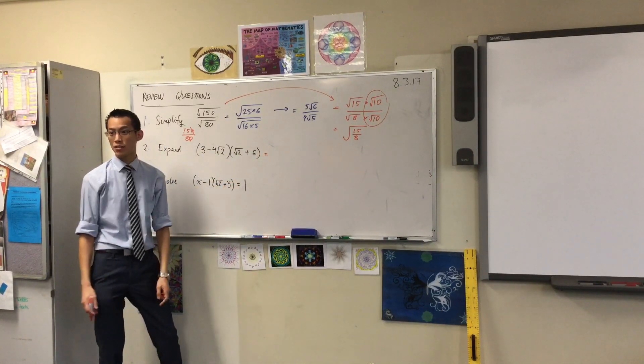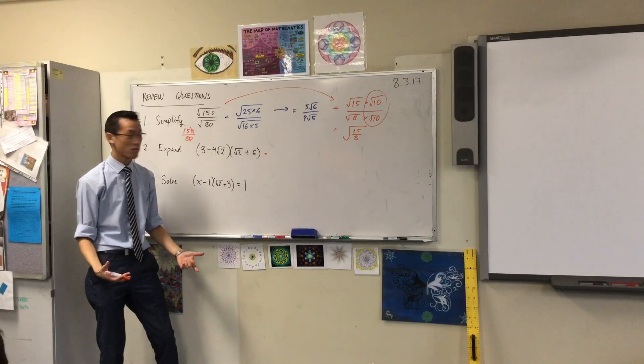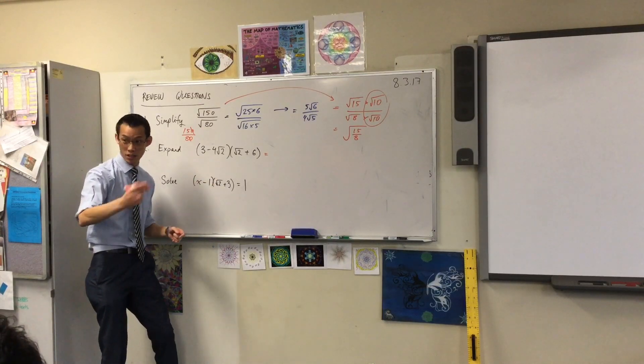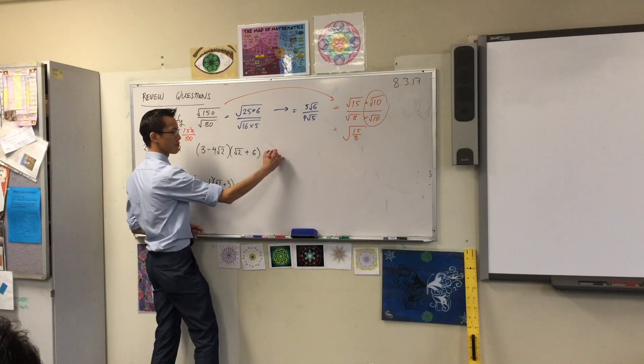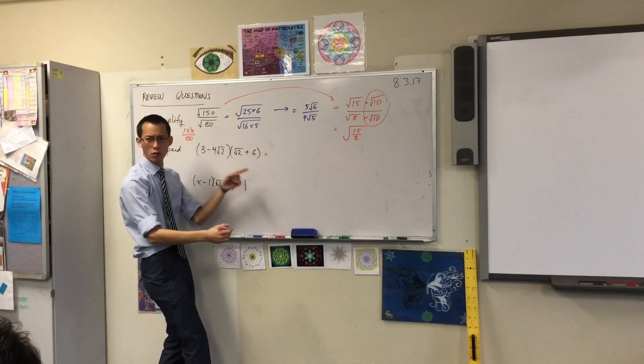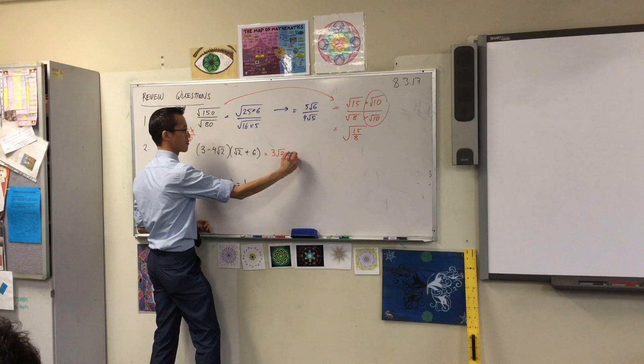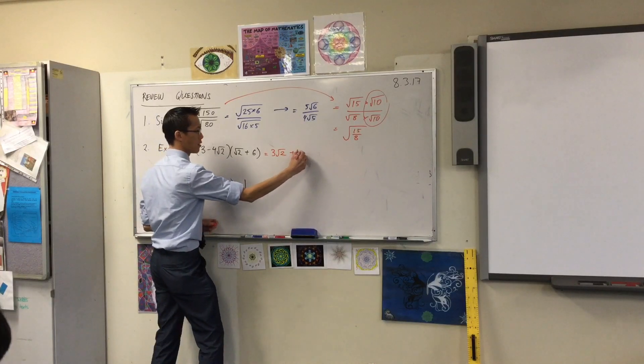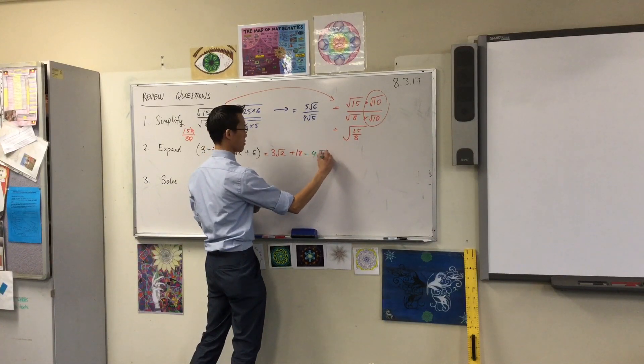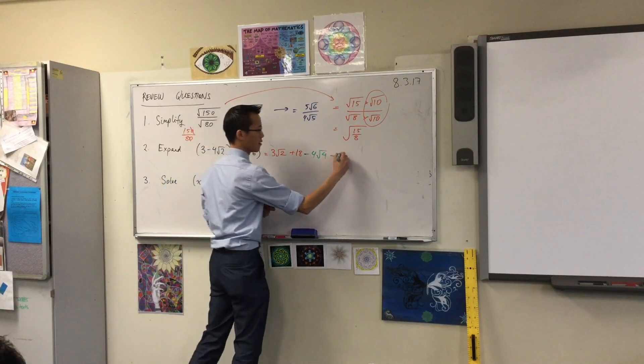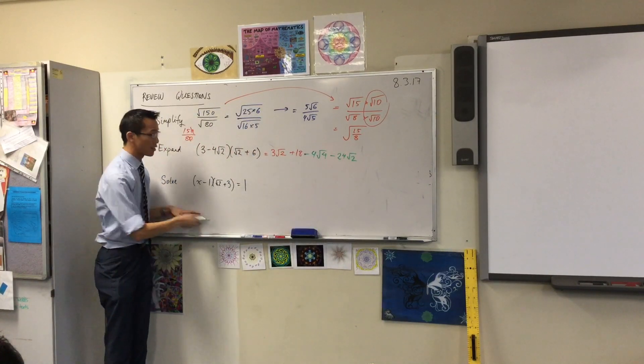Has someone got an expansion for me? Do you want to help me do the first line? Areeb, do you want to give me some working? Can I do the first one? 3 root 2 plus 18, minus 4 root 2 times root 2, minus 4 times 6 which is minus 24. So, Areeb's nailed it.